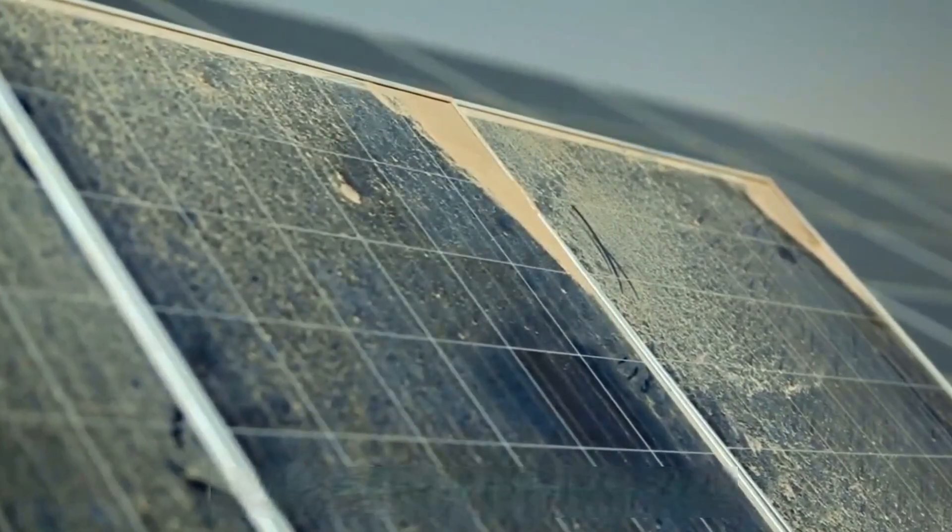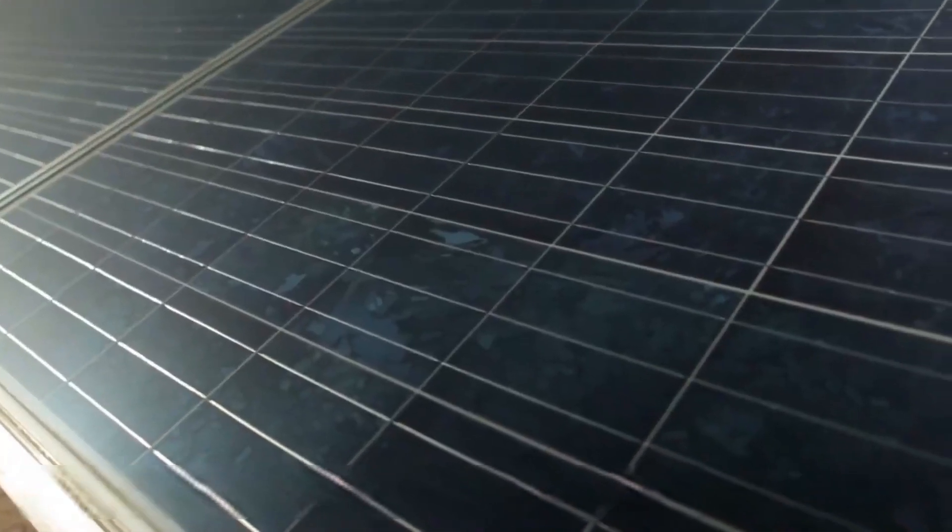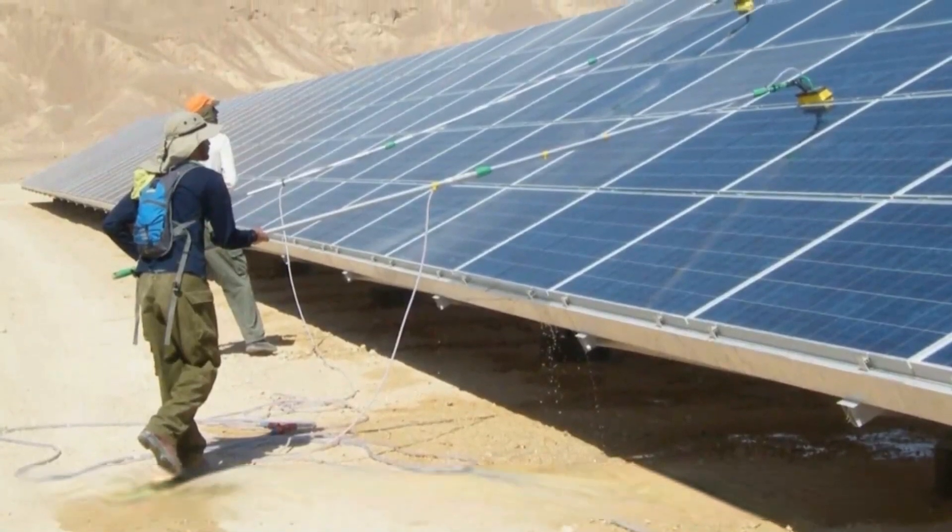Photovoltaic panels that are always exposed will accumulate a lot of dust and even bird droppings. This will affect the efficiency of power generation.